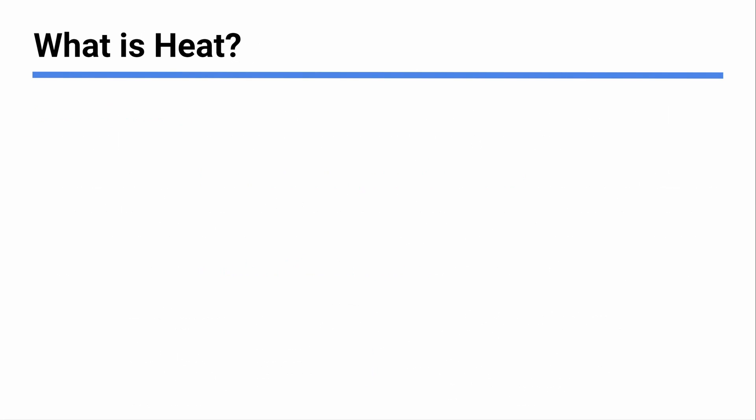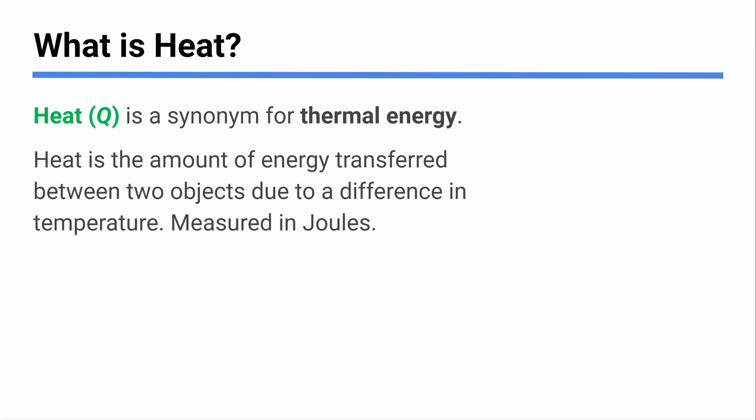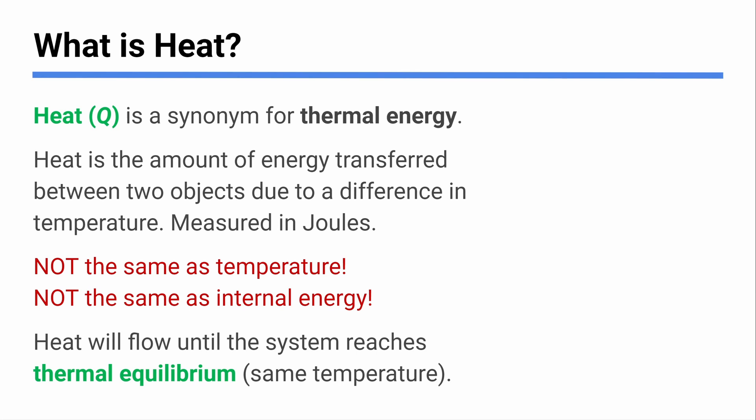So here you go. That's what heat is. We're going to use Q for heat. Heat means thermal energy. It is an amount of energy. So you're going to measure it in joules. And it is this transfer between objects that typically is going to be because of a temperature difference. You be careful. Heat and temperature are not the same thing. Temperature is not a thing you measure in joules. Heat is a thing you measure in joules. Heat is not even really the same thing as internal energy.